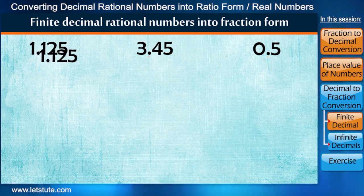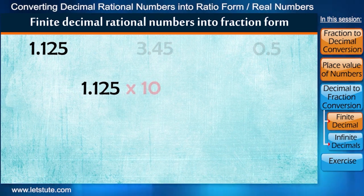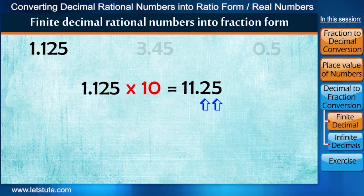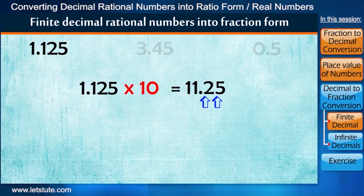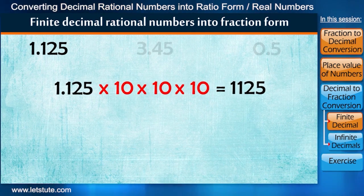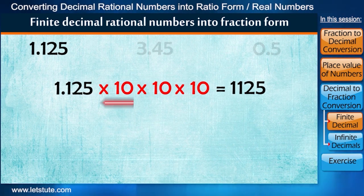If we talk about the first number, here as we just learned, when we multiply by 10, then 1 digit will shift to the left of decimal. Now we can see after decimal, we still have 2 digits. That means we have to again multiply by 2 tens to remove the decimal point. So multiplying by 3 tens is as good as multiplying by 1000.